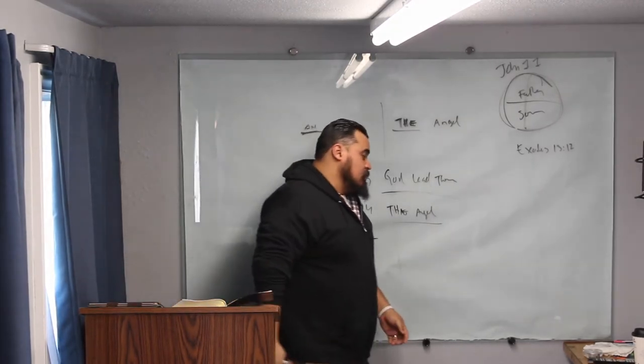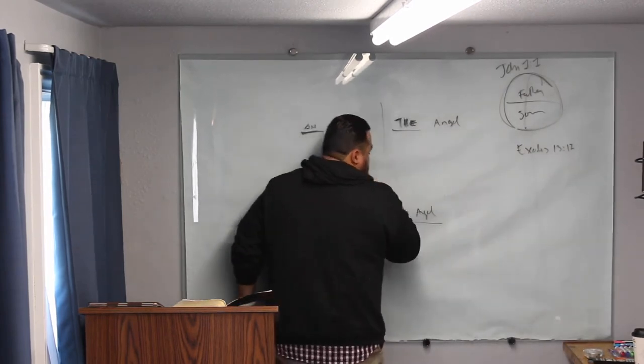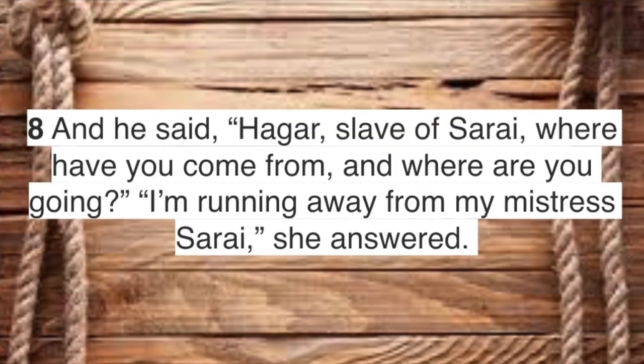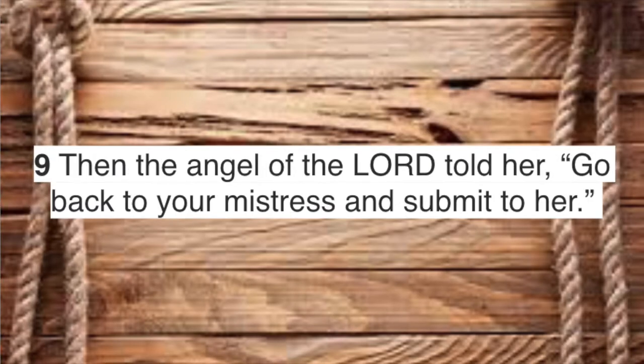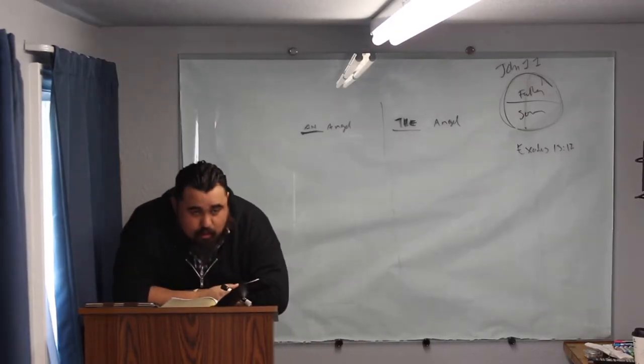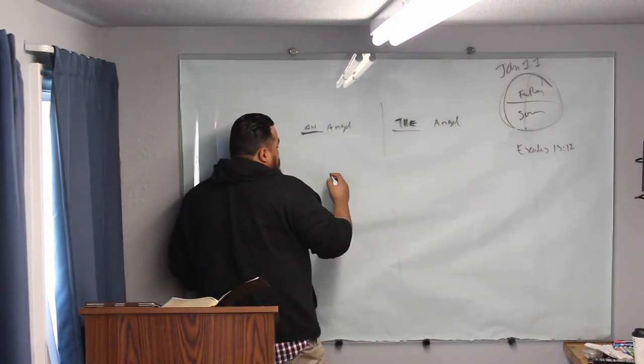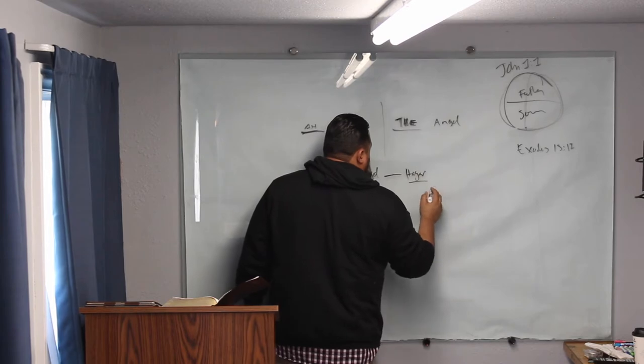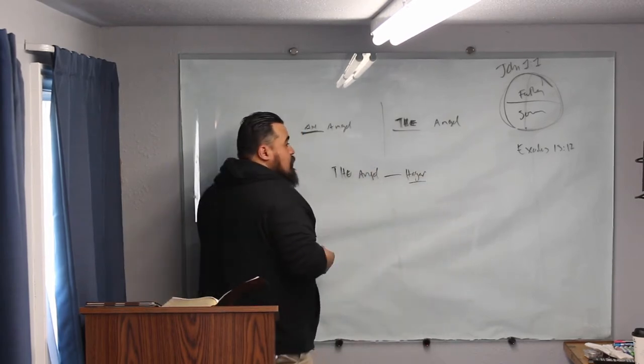Let's look at this, the angel. Genesis 16, chapter 16, verse 7-10. Go ahead and read it. The angel of the Lord found her by a spring of water in the wilderness, the spring on the way to Shur. And he said, Hagar, servant of Sarai, where have you come from and where are you going? She said, I am fleeing from my mistress Sarai. The angel of the Lord said to her, return to your mistress and submit to her. The angel of the Lord said to her, I will surely multiply your offspring so they cannot be numbered for the multitude. So, we have the angel of the Lord and who else? Hagar. Who's Hagar? The servant. Who's servant? Sarah's servant.